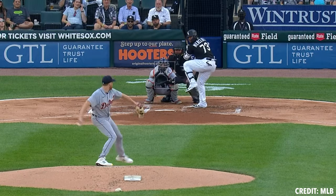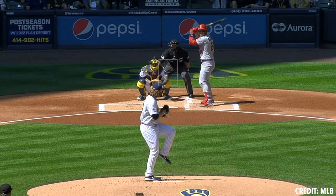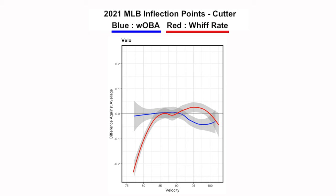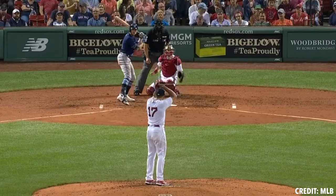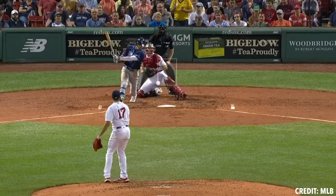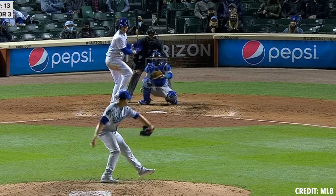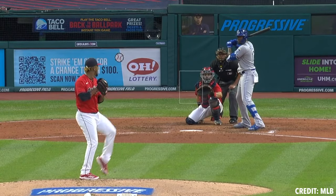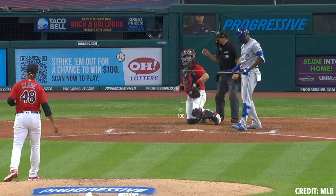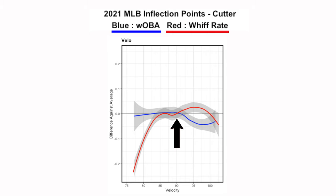First, looking at velocity — this is the graph that really jumps out. Basically, if you are not going to throw a cutter over 84 or 85 miles an hour, there's really not much point to do it. Regardless of the movement, you can see whiff rate just go right down the drain. Cutters are technically identified as fastballs, so velocity needs to be high. You can see once you're getting to 90 miles an hour, whiff rate going up and WOBA going down — you are inducing weaker contact. You have to throw this pitch hard.